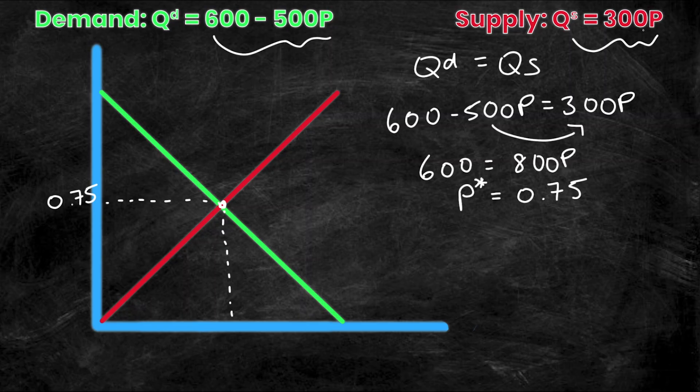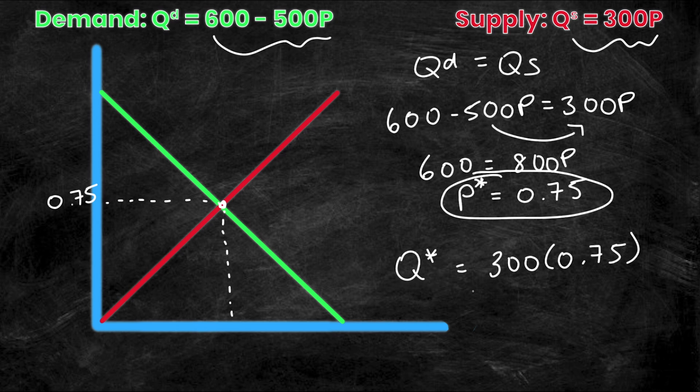So I'm going to sub it into QS as that's significantly easier and we'll do that right now. So my P star value is right here and we'll sub into QS for my Q star value. So Q star is simply equal to 300 times P. And I know that P is 0.75. Therefore, Q star is equal to 225.